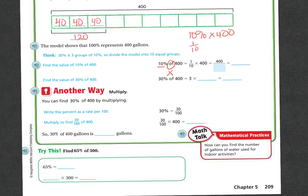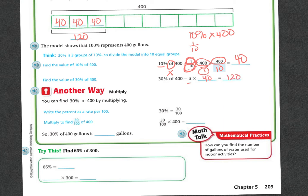The easiest way is to turn it into a fraction. So 10% is the same thing as 1/10. So we do 1/10 times 400. Whenever you have a whole number, put the 1 underneath. So you have 1 times 400, which is 400, and 10 times 1 which is 10. 400 divided by 10 is 40. So 30% of 400 is going to be three times 40, and three times 40 is 120.